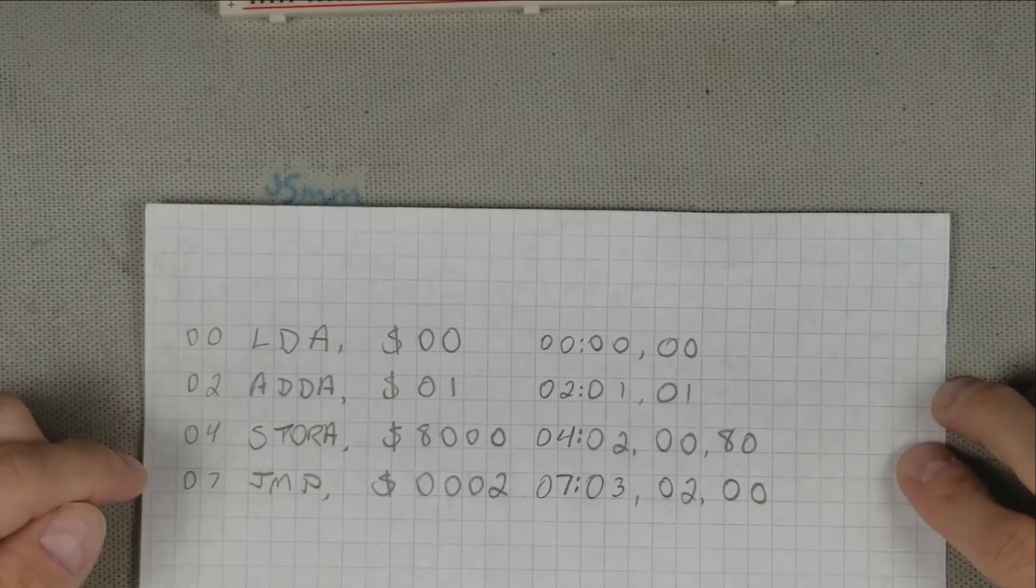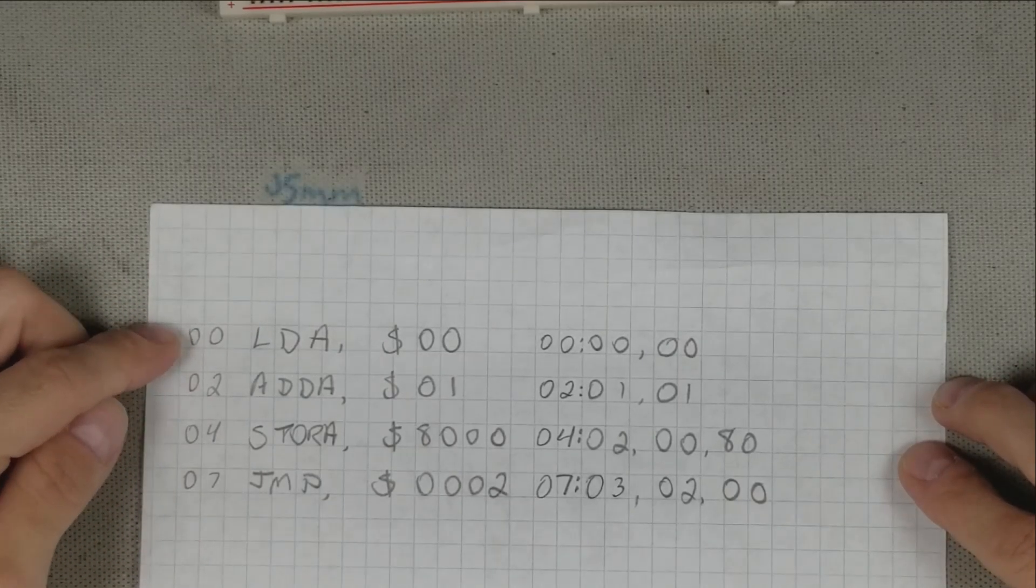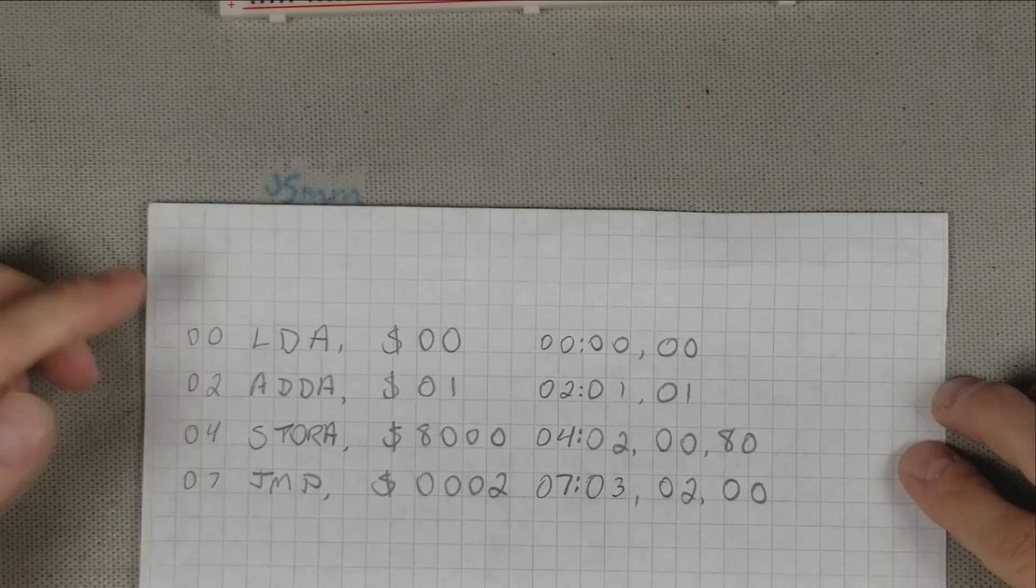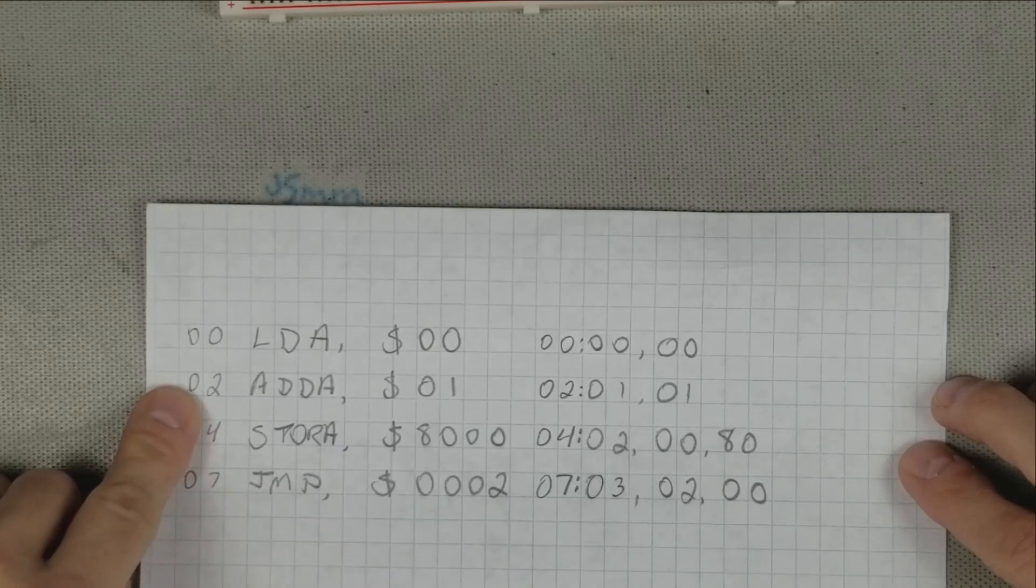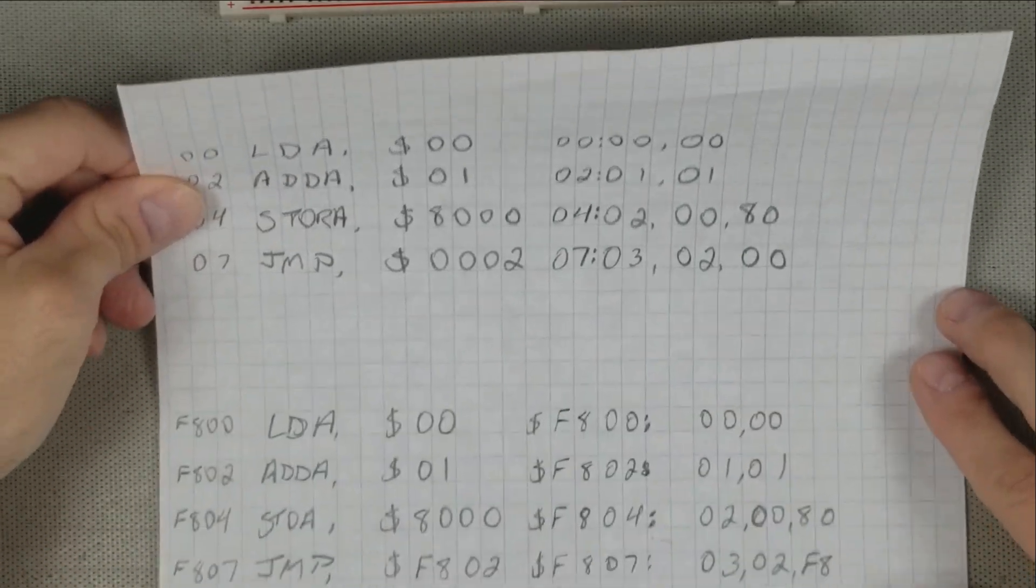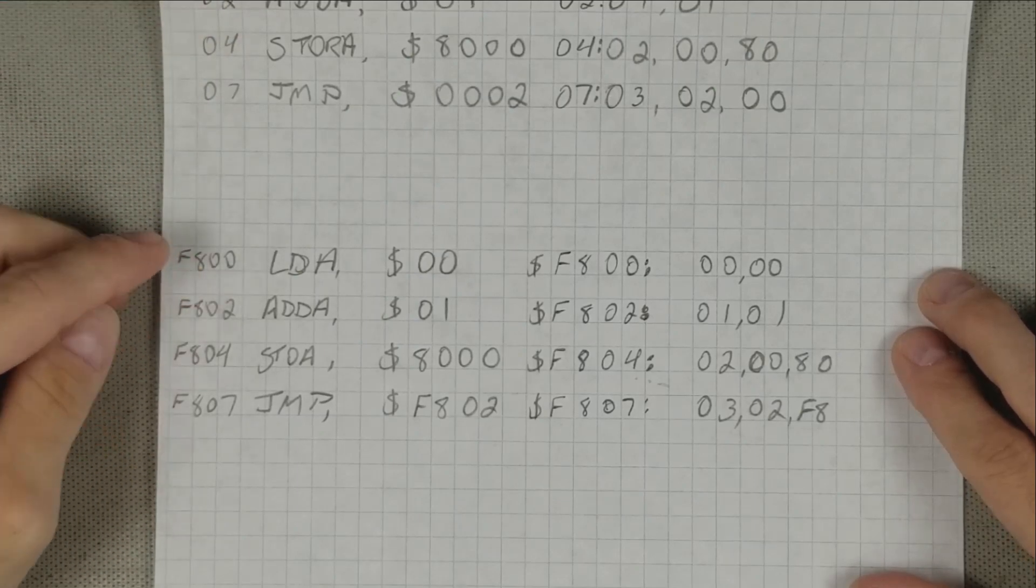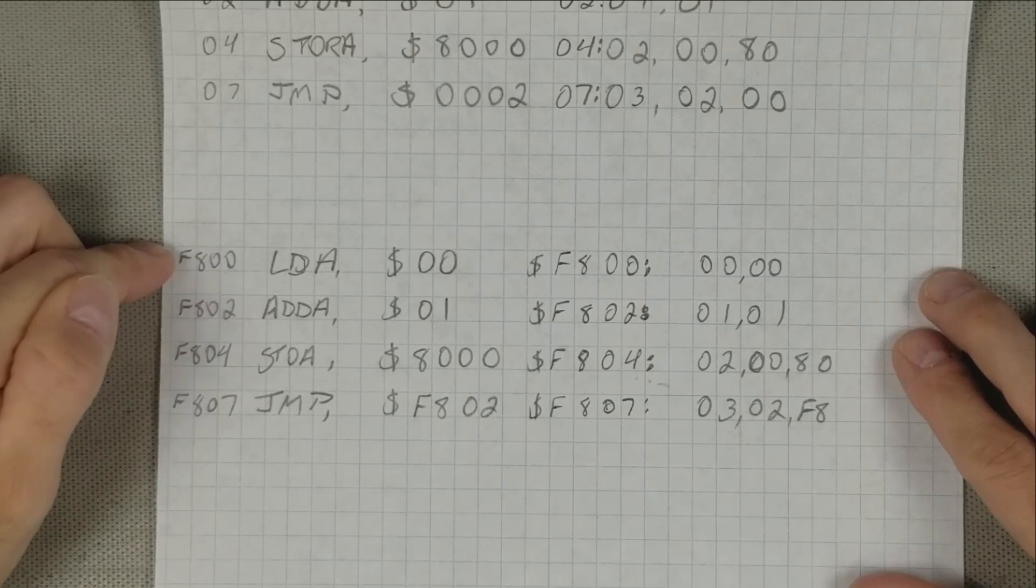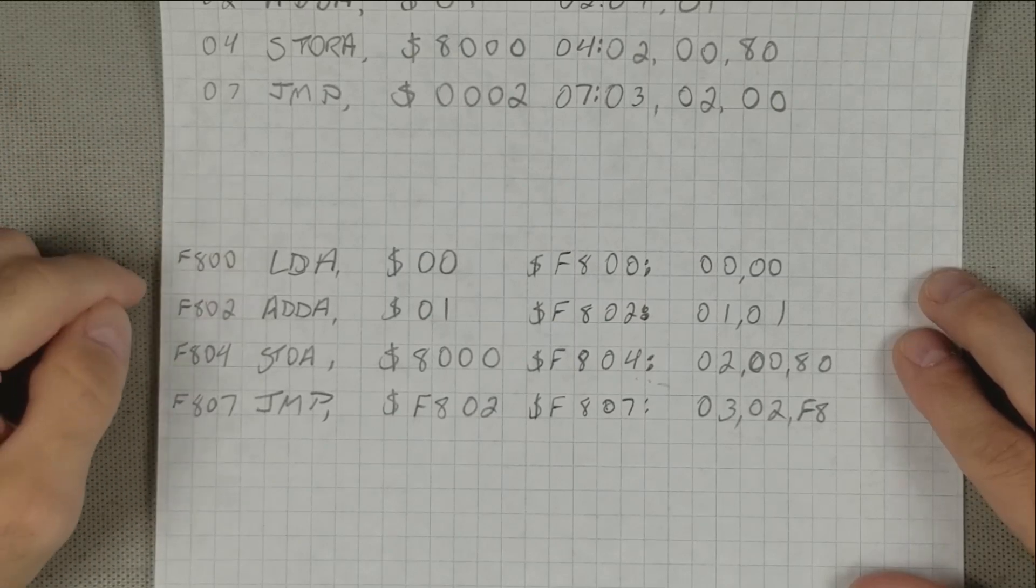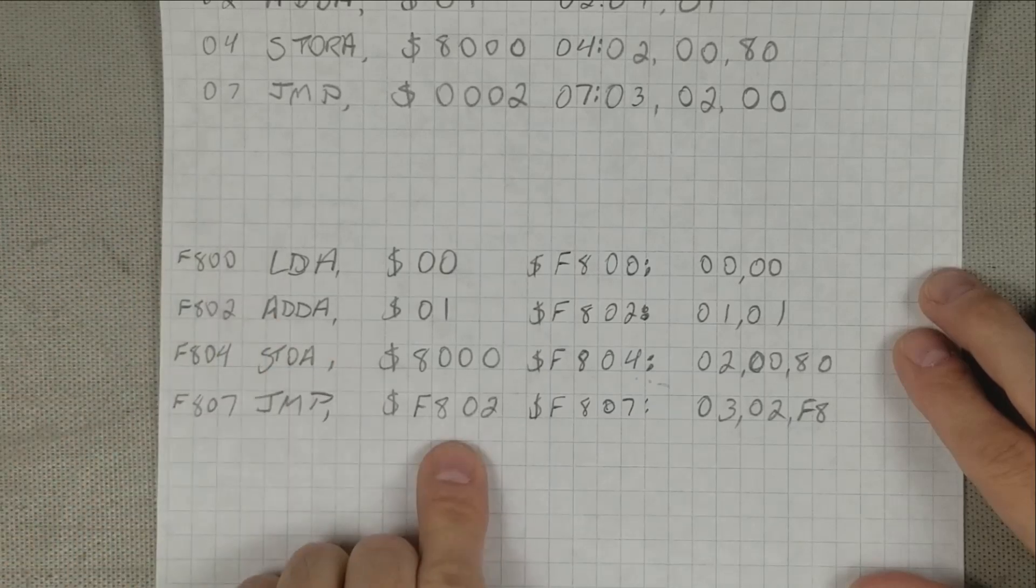If you remember from the previous program, it started at address 0, with the Add A instruction at address 2. So when the program gets to the jump instruction, it jumps back to address 2. In the new top-down version, the program will start at address F800, which is the start address of the ROM in the system. Everything is the same as before, except for the address of the jump instruction, which is now at F802.